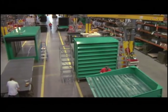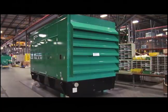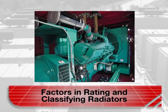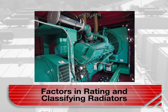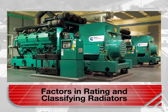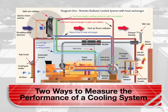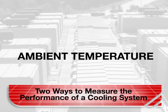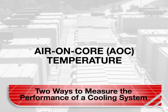Now we dive into the details of rating and classifying radiators. These are the factors involved: where they are installed, the temperatures they are rated to handle, and how those ratings are determined. There are two ways to measure the performance of a cooling system: ambient temperature and what's called the air on core, or AOC.